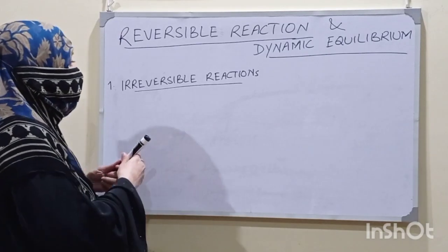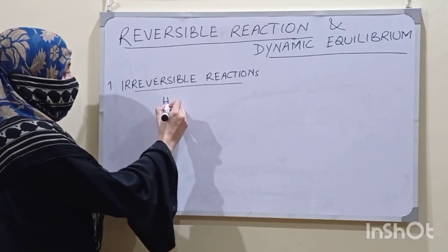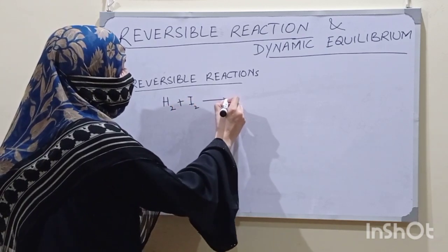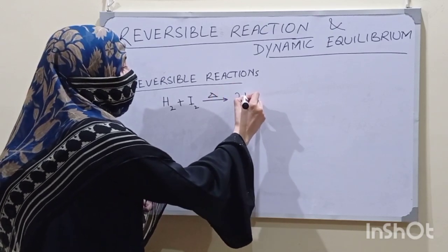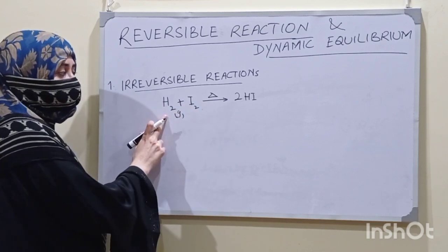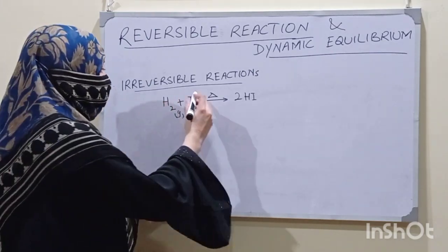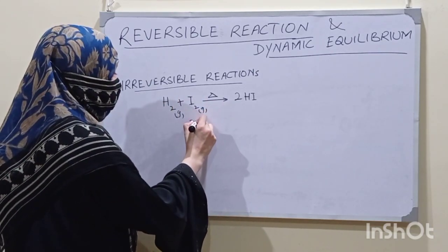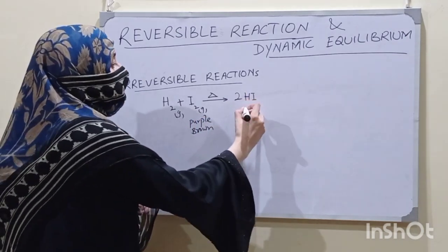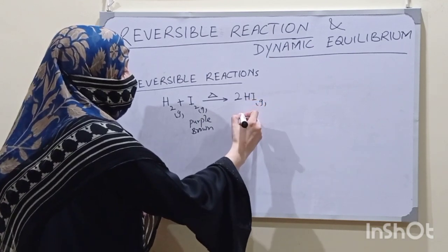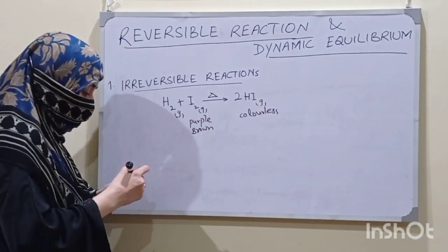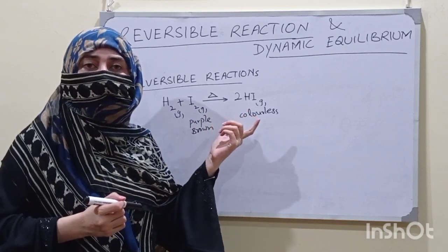For example, if we have hydrogen gas and iodine vapors and we heat it, hydrogen iodide is formed. Hydrogen gas is a colorless gas, and iodine vapors are purple-brown in color. But by the end of the reaction we get a colorless vapor — a colorless gas — that confirms that a new substance has been formed.